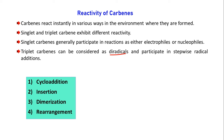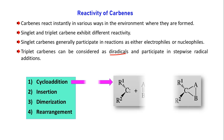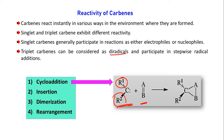This video, which is Part 5, is only for cycloaddition, so here we will discuss in detail what a cycloaddition reaction is. In general, we can express this reaction as follows: on the left-hand side we have carbene with two different substituents, and an unsaturated molecule represented as A double bond B. After cycloaddition, two new sigma bonds are generated and the pi bond between A and B is broken, giving a cyclic structure — that is why it is called cycloaddition.